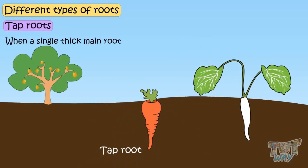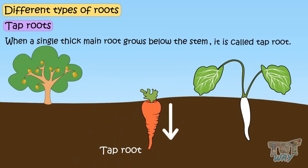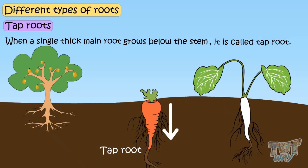When a single thick main root grows below the stem, it is called tap root. Many thin roots, which are unequal in size, grow from this main root.